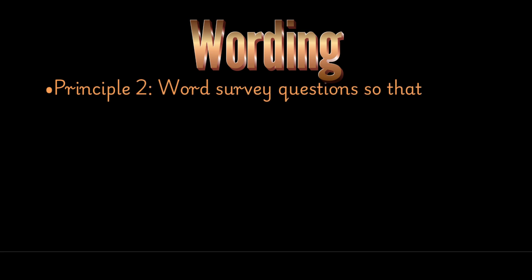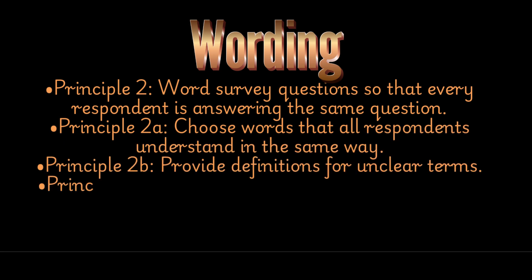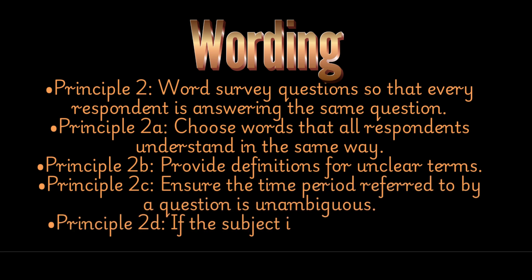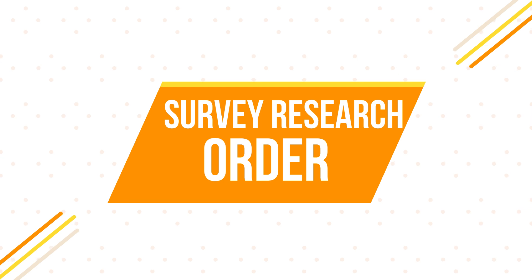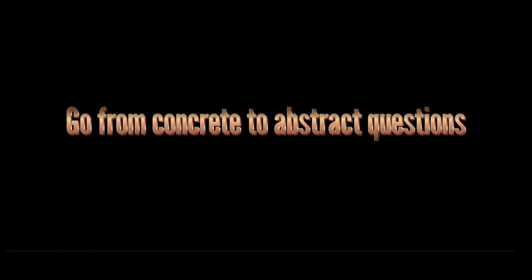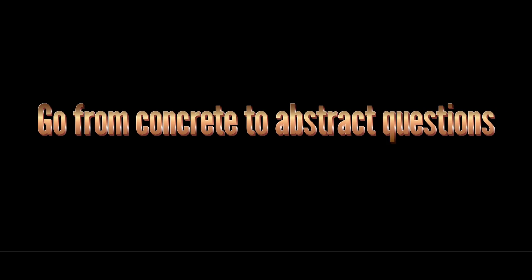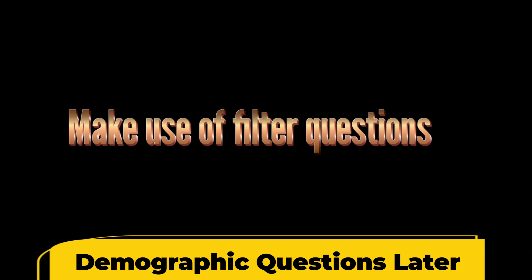Regarding wording: word survey questions so that every respondent is answering the same question. Choose words that all respondents understand in the same way. Provide definitions for unclear terms. Ensure the time period referred to by a question is unambiguous. If the subject is too complex for one question, break it into multiple questions. The order of questions is extremely important. Commence with questions that respondents will enjoy answering — these should be easily answered questions. Go from easy to more difficult questions gradually, and from concrete to abstract questions. Group similar questions into sections to help structure the questionnaire and provide better flow. Make use of filter questions to ensure that questions are relevant to the respondents. Do not start with demographic questions such as age or marital status.